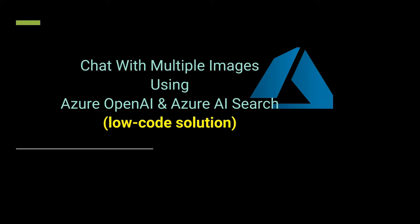Hello everyone, welcome to another video in the series of images. I have already made a video on how you can query images, but in this video I will show you how you can query multiple images at once. If you have many images stored in a directory or even Azure Storage and you want to utilize those images to query, we will be using Azure OpenAI with Vision API and Azure AI Search.